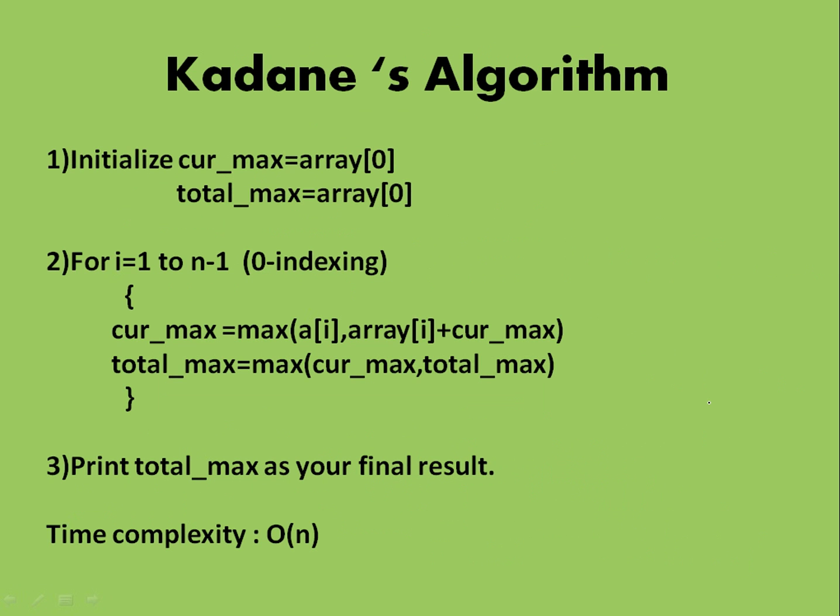As we have already seen the example, so now it is very easy to see this algorithm and understand it. Firstly, we have initialized it with array[0]. And then I will go in a loop from 1 to n-1, and every time I will change my current_max accordingly. And if current_max is greater than total_max, then I will change the total_max also. So in this way, after completing this whole traversing, I will finally get my result which is in total_max.